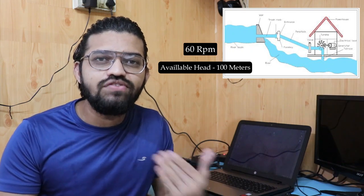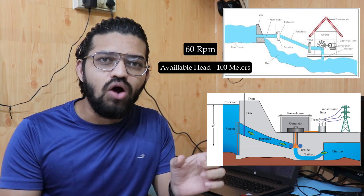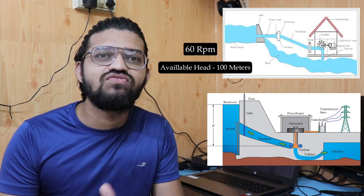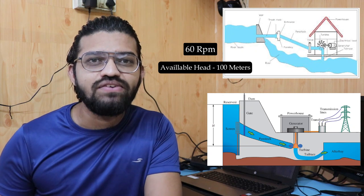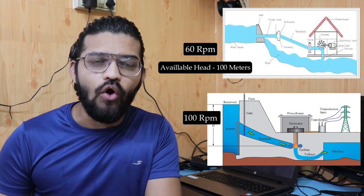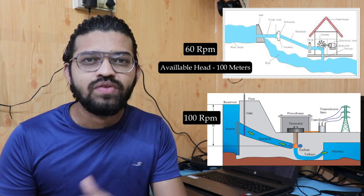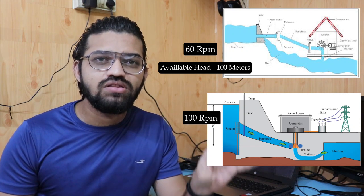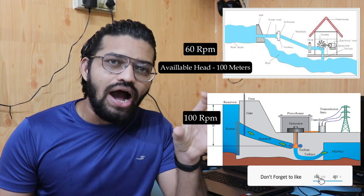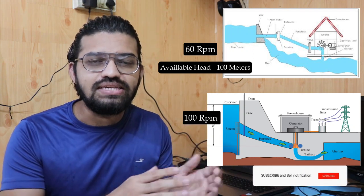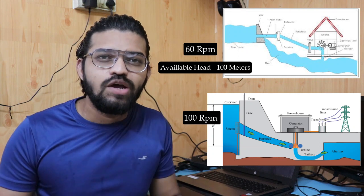Now consider a different turbine — a Francis turbine — with the same available head of 100 meters. If that head is imparted on the Francis turbine, it will rotate at a higher speed, let's say 100 RPM. So with the same available head, the Pelton wheel gives 60 RPM and the Francis turbine gives 100 RPM. These are the respective speeds of the turbines, but they are not the specific speed.